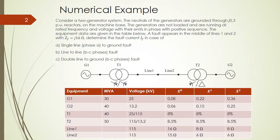The equipment data are given as follows. We have the PU values for zero sequence, positive sequence, and negative sequence in comparison with the base of each device. For line 1 and line 2 we already have the impedance or reactance values.